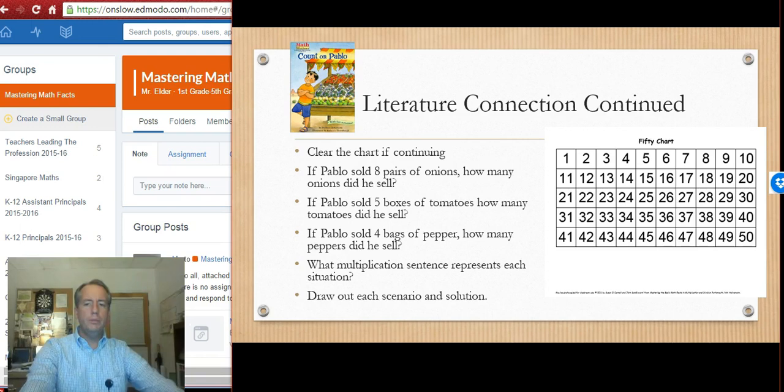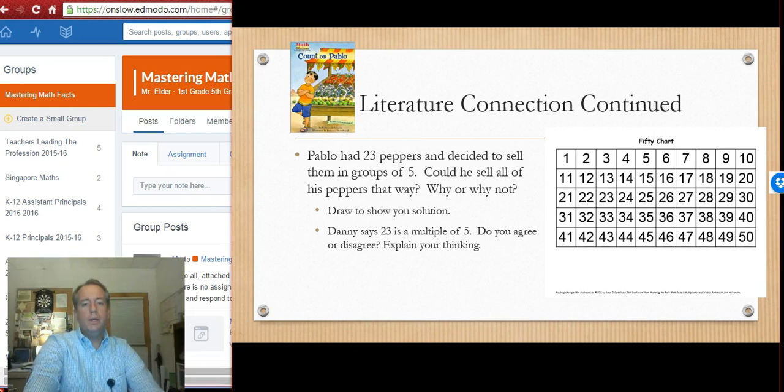Then we build up to a more rigorous, a more in-depth kind of question. Like Pablo has 23 peppers and can he sell them all in groups of five? Why or why not? And let's pose the fictitious student Danny. Danny says, sure he can, that 23 is a multiple of five, or he could just make a bag that only had three in it. And is that okay? So getting kids to really talk about, well, can you get 23 equal or get equal groups of five from 23? Well, obviously that would be really connecting even into division.